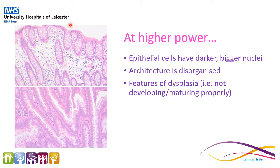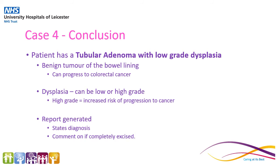Looking at higher power, we've got a picture of the normal bowel mucosa and then a picture of the polyp. Within the polyp, the epithelial cells have bigger, darker nuclei and the architecture of the glands is much more disorganised, whereas within the normal bowel mucosa they should be quite straight and regular. These are features of dysplasia, i.e. the epithelium is not developing properly. This patient has a tubular adenoma with low-grade dysplasia. A tubular adenoma is a polyp, a benign tumour of the bowel lining, but it can progress to cancer. They all show dysplasia and this may be low or high-grade — if it's high-grade, there is an increased risk of progression to cancer. We would generate a report stating the diagnosis and commenting on if the polyp had been completely removed.